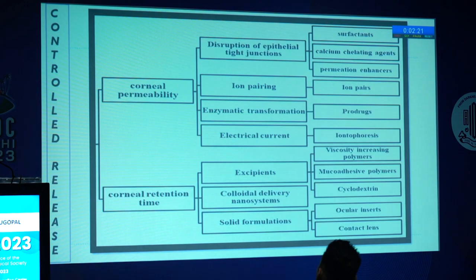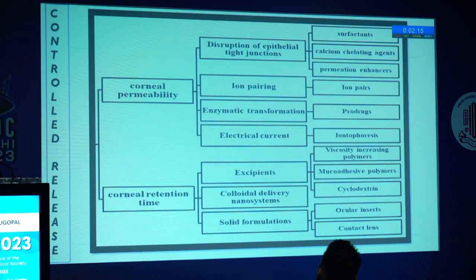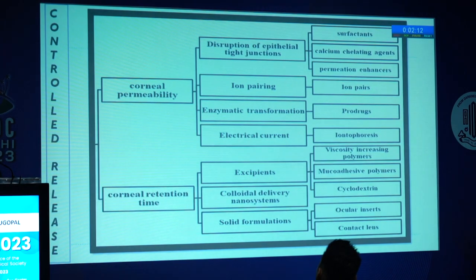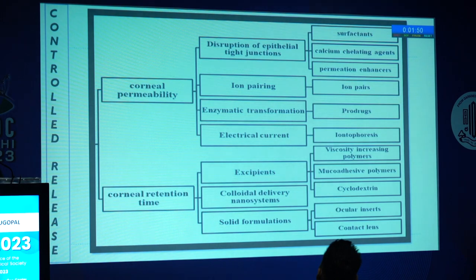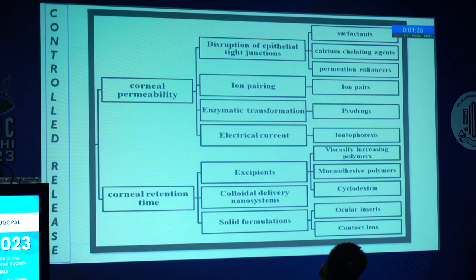Controlled release drug delivery has two types: agents that improve corneal permeability and agents that increase corneal retention time. Corneal permeability can be increased by disruption of epithelial tight junctions using surfactants, calcium chelating agents, permeation enhancers, ion pairing, enzymatic transformation using prodrugs, and electrical current iontophoresis. Retention time is prolonged using excipients like viscosity-increasing polymers, mucoadhesive polymers, cyclodextrin, colloidal delivery nanosystems, and solid formulations like ocular inserts and contact lenses.